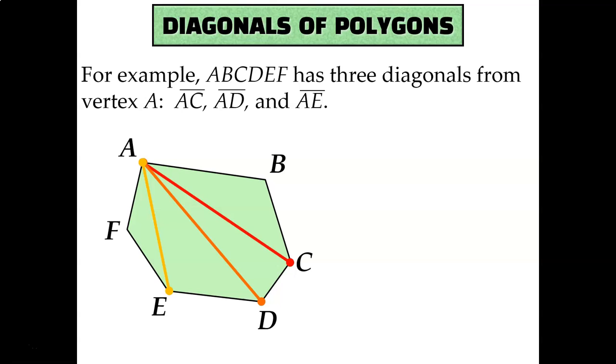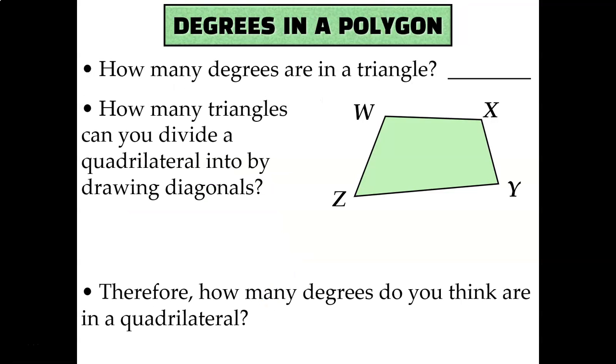So let's use this concept to help us identify the total degree measure of the interior angles of each type of polygon. My first question is how many degrees are in a triangle? If I add up all three angles of a triangle, it always equals 180 degrees.